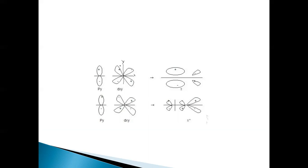This DXY orbital combination takes place in such a way that the orbitals are not oriented along the internuclear axis — they are perpendicular to the internuclear axis. That means it results in the pi type of bonding, since lateral overlap is occurring.